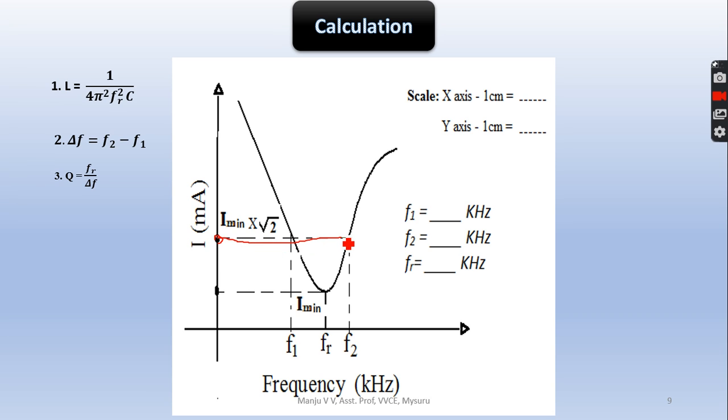From that draw horizontal line such that it should cut the frequency curve at two positions. From there draw vertical line. You will get F1 and F2. Difference between F1 and F2, so you will get the bandwidth. And calculate quality factor as well as the unknown inductor value.